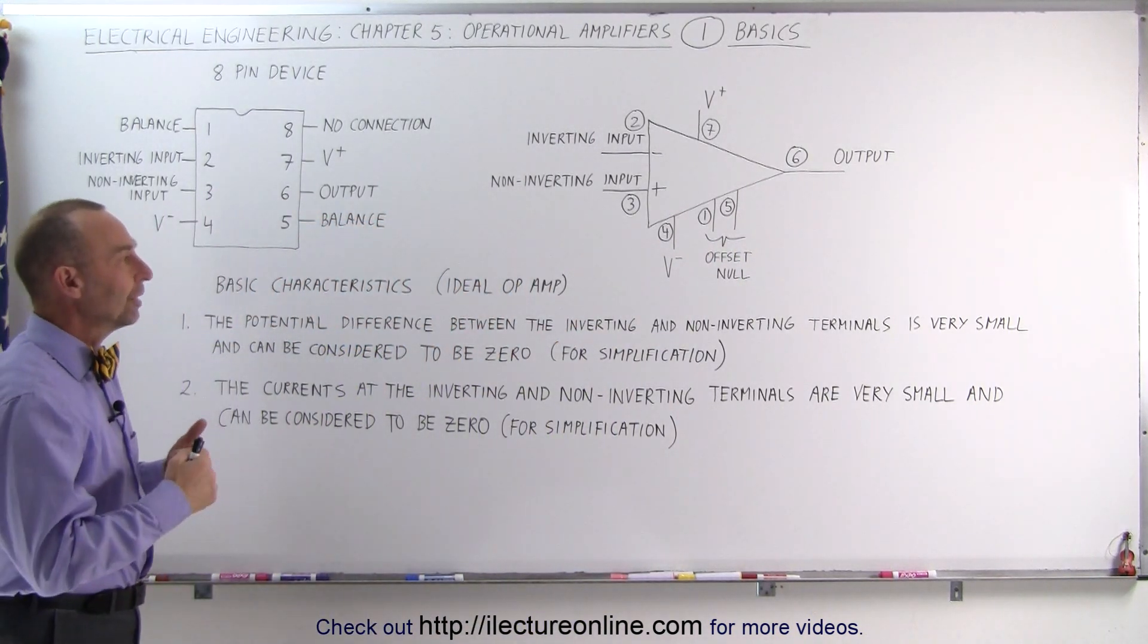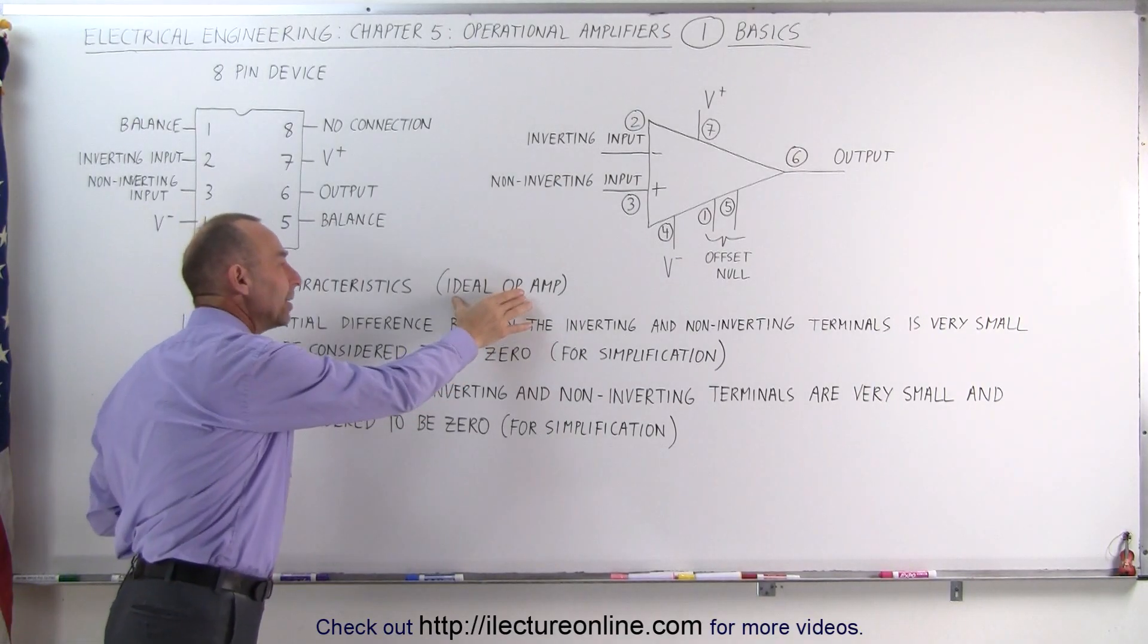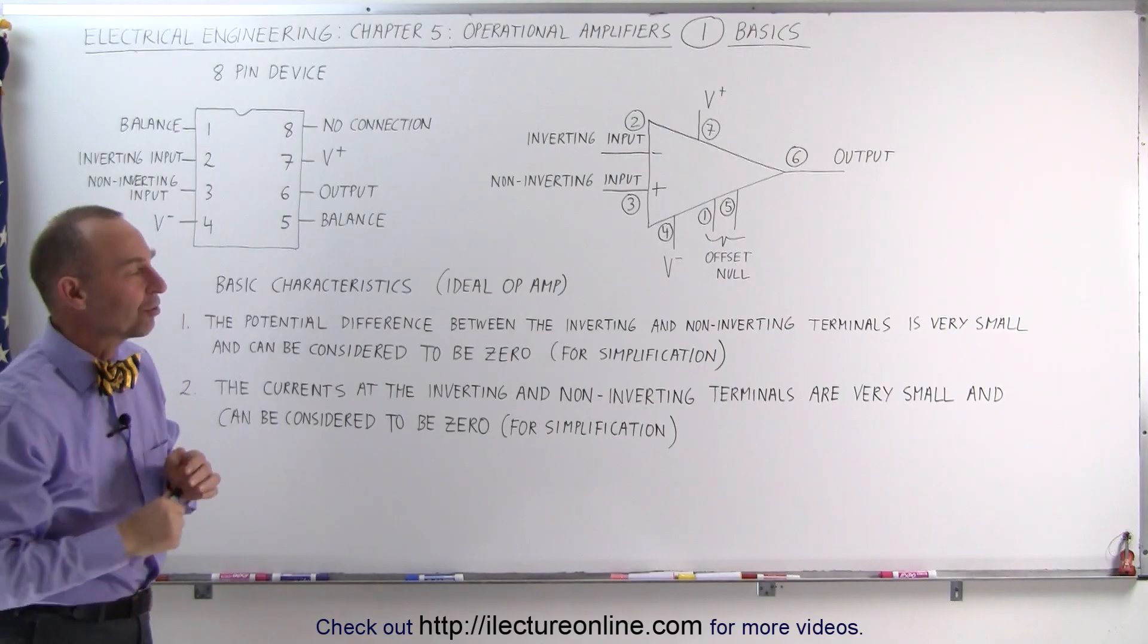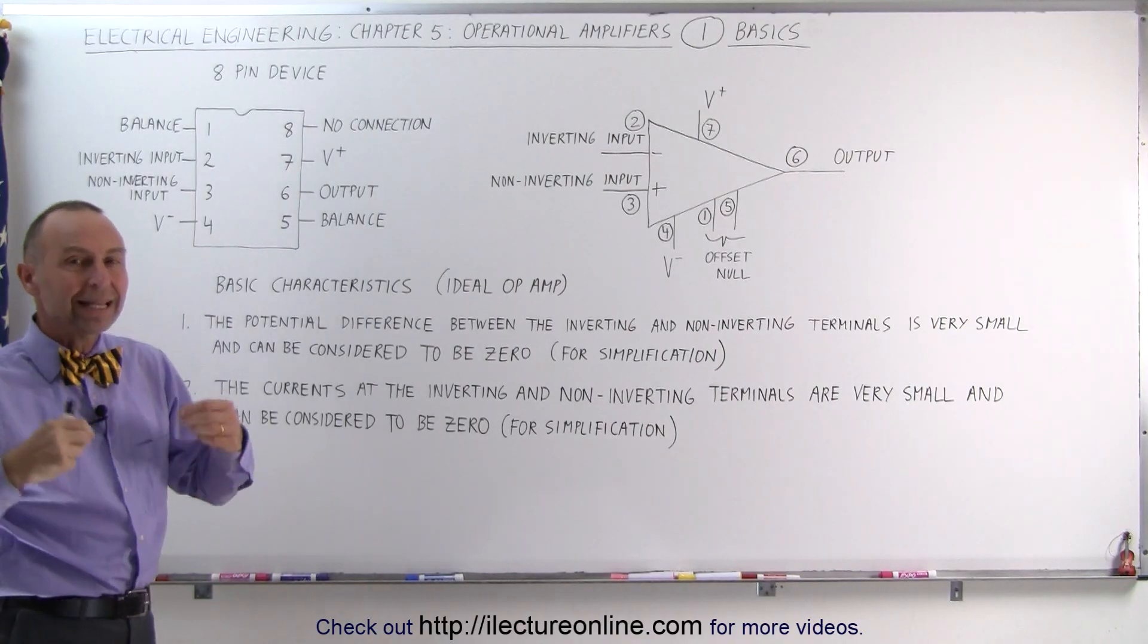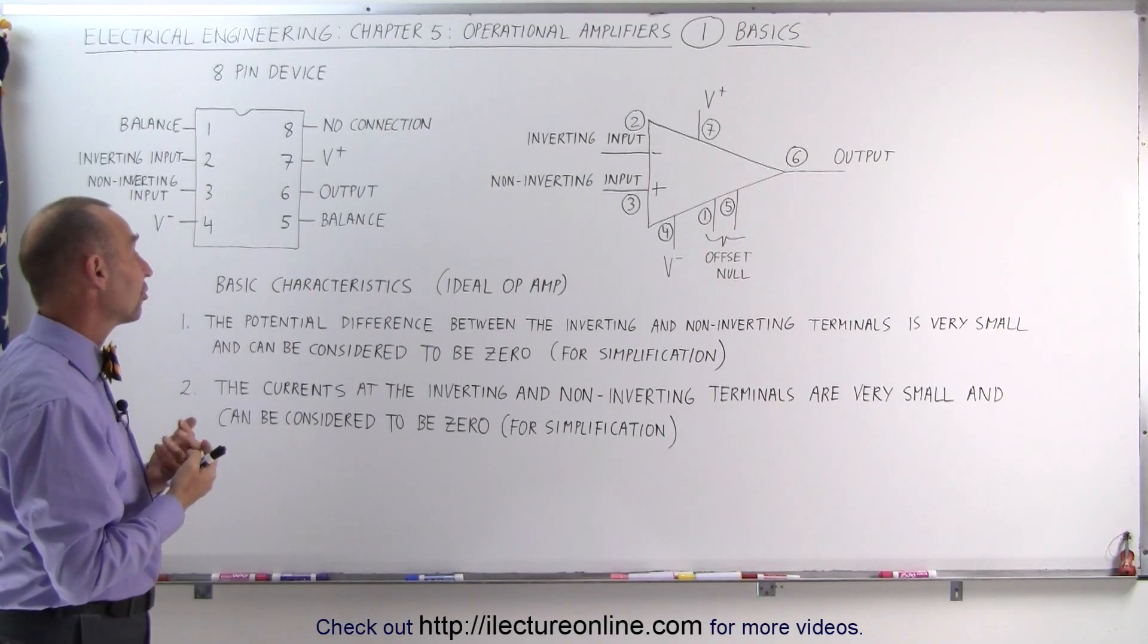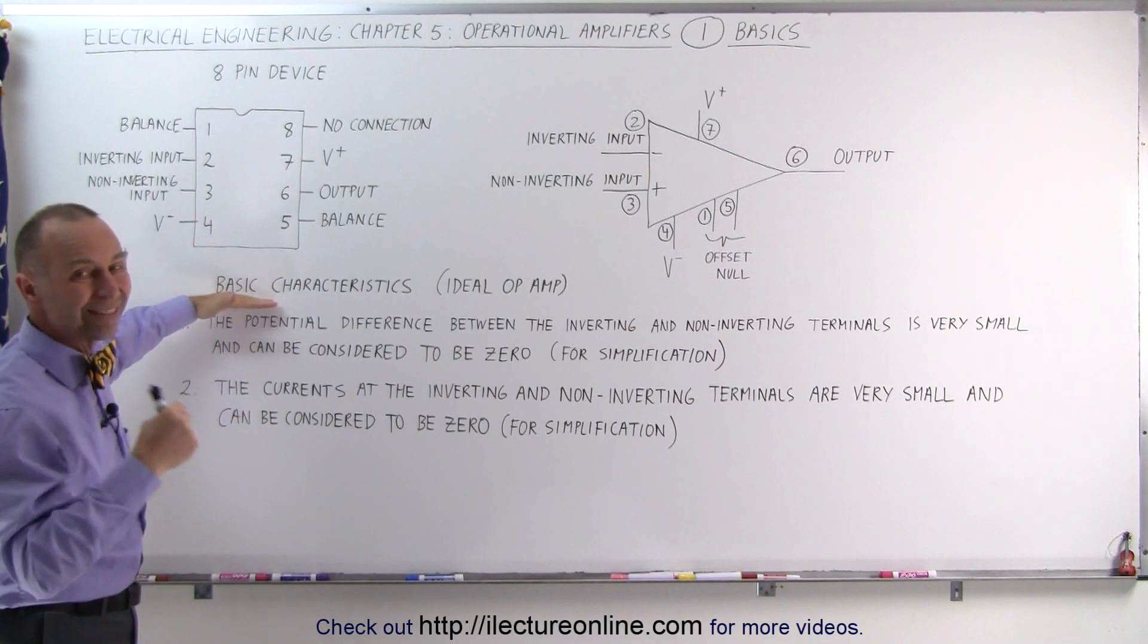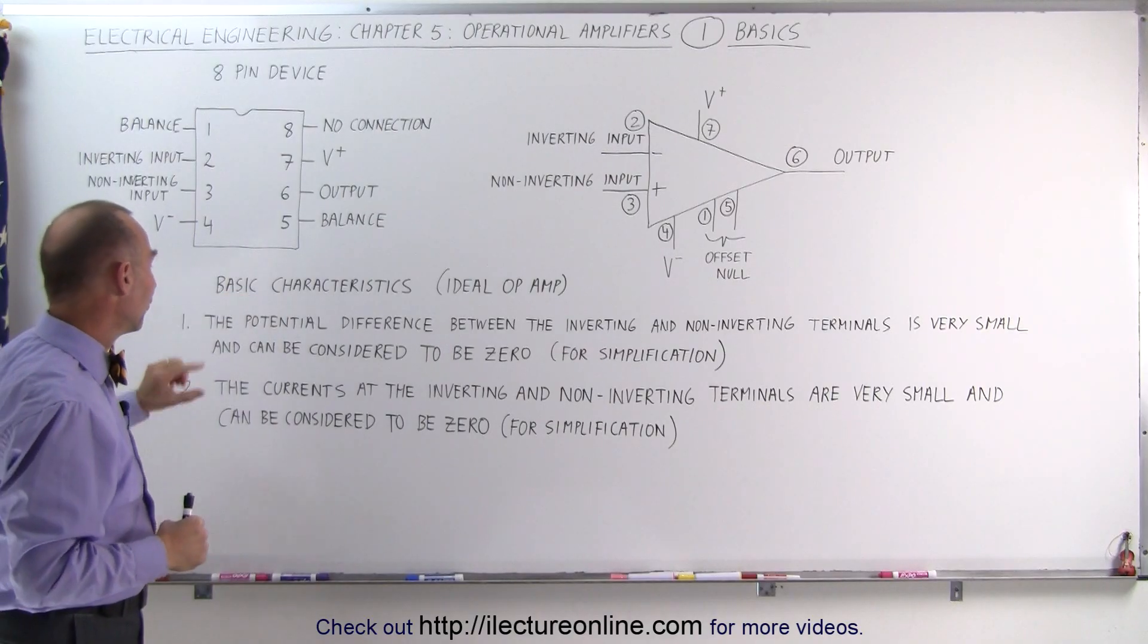The basic operation can be simplified by talking about what we call the ideal op-amp, the ideal operational amplifier. To make it easier to work with the circuit of the operational amplifier, we're going to talk about the two basic characteristics which simplify the concept.